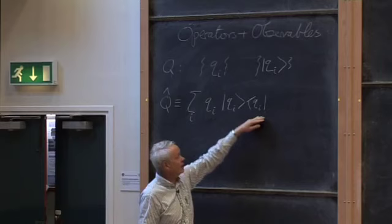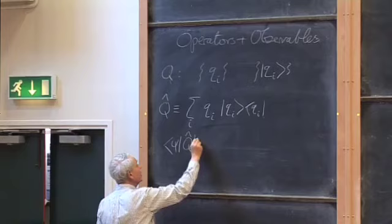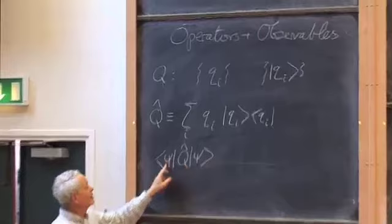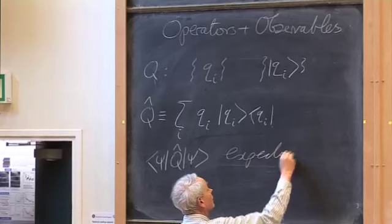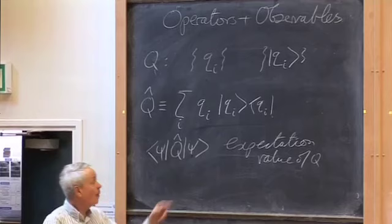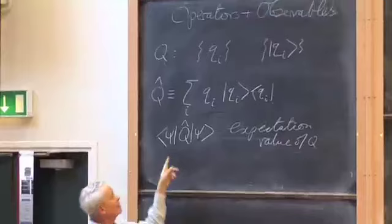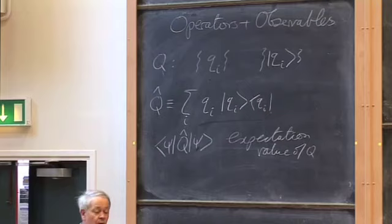Out of those states and those numbers, we construct an operator. One useful aspect of this operator is that if you squeeze it between the ket — the state of your system — and the associated bra, you get out the expectation value of the observable Q when we're in that state. When the result of the measurement is probabilistic, this simple algebraic formula gives the expectation value.